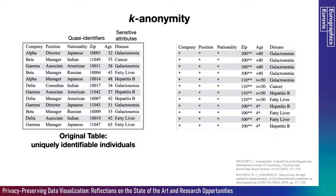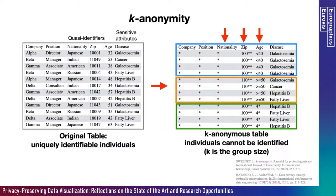The first model we will discuss is the k-anonymity model. On the left-hand side, we have a dataset from hospital clinical records with quasi-identifiers like nationality, zip code, and age, along with sensitive attributes like disease. In this table, individuals are uniquely identifiable. But if we apply the k-anonymity model to this dataset, on the right-hand side we have a four-anonymous table. In this table, we can easily see there are three different groups, and the individuals cannot be uniquely identified.